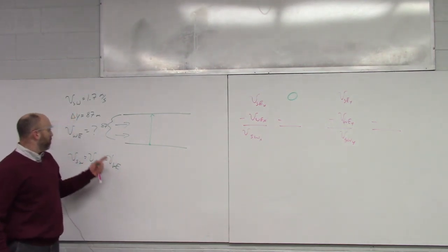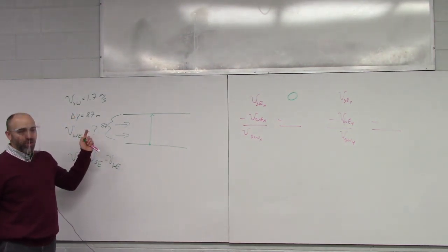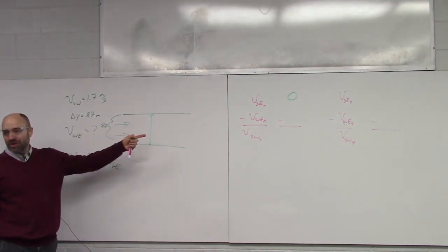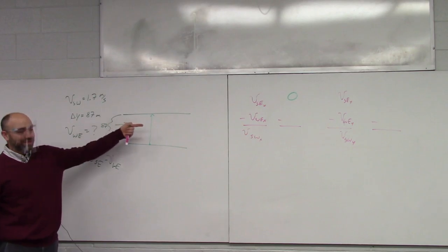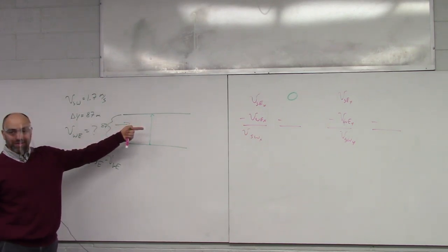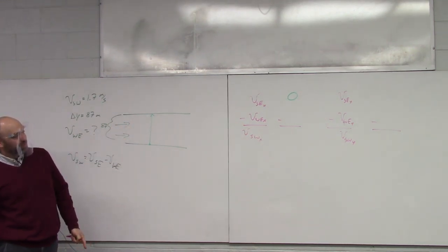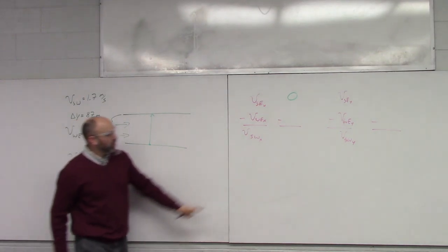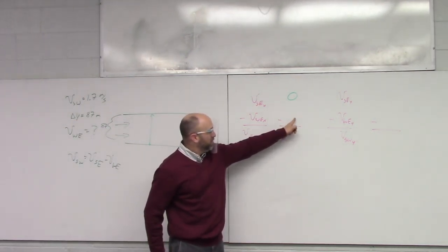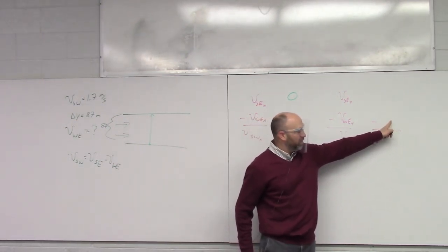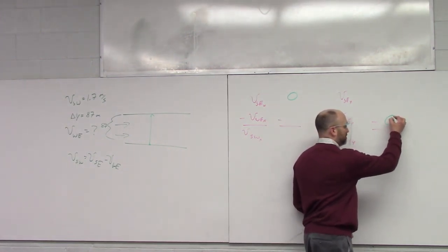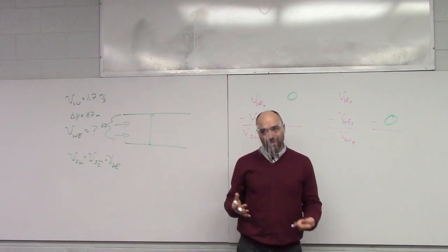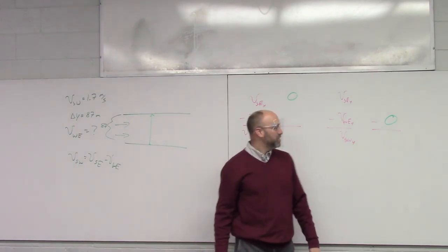The river is going straight in one direction — the x-direction. So the water's velocity goes in the x-slot. That tells us the water's y-velocity is zero. You just logic your way through each piece of this.